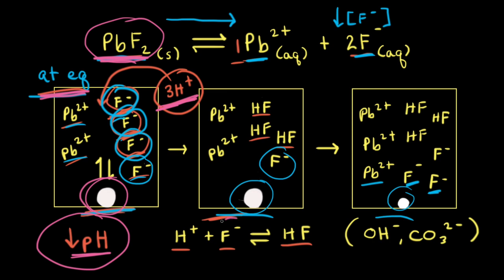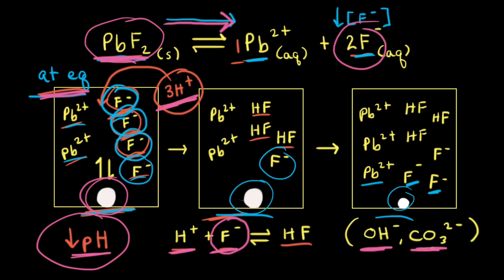For this example, the basic anion is the fluoride anion, which reacts with the added H⁺ ions. When the basic anion reacts, that decreases the concentration of that basic anion, which causes the equilibrium to shift to the right. There are many other examples of basic anions — two more would be the hydroxide anion and the carbonate anion. If a compound contains a hydroxide anion, the hydroxide functions as a base and reacts with H⁺ ions to form H₂O.